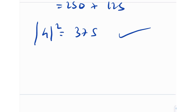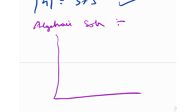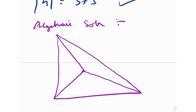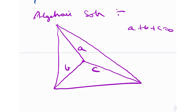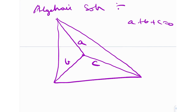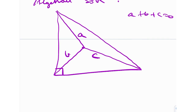To understand more rigorously why the answer is 50%, let's look at the algebraic solution. We have a right-angled triangle where A, B, and C are vertices with the 90° angle at B. By vector subtraction, the side from A to B is A − B, the side from B to C is B − C, and the hypotenuse from A to C is A − C.